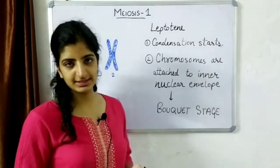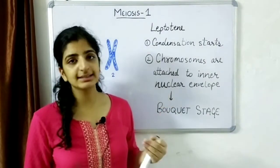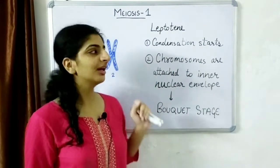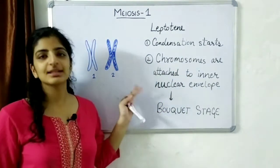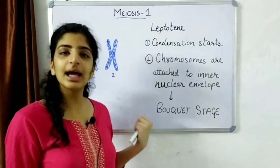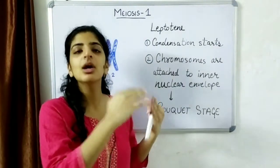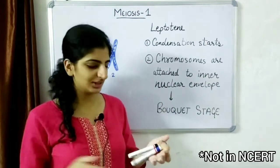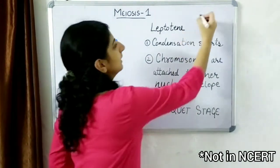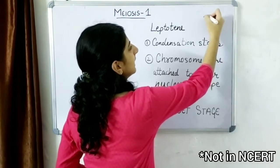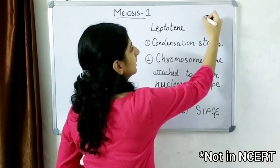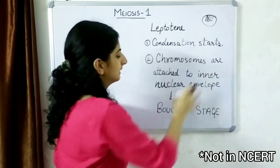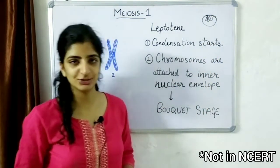The first stage is the leptotene stage. In this stage, as in mitotic division, the condensation of the chromosomes starts. Along with this, the chromosomes are attached to the inner membrane of the nucleus, forming a flower-like structure inside the membrane. This stage is therefore also known as the bouquet stage.